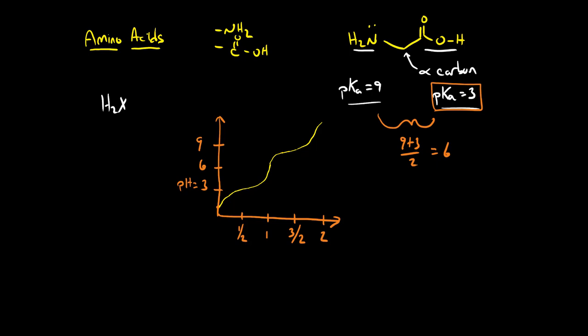And each of these points, the first half equivalence point, the equivalence point, and the second half equivalence point are really easy to predict. So now let's think about what these chemical species might be at different pHs. We've learned about speciation curves. So let's go ahead and sketch one out here.